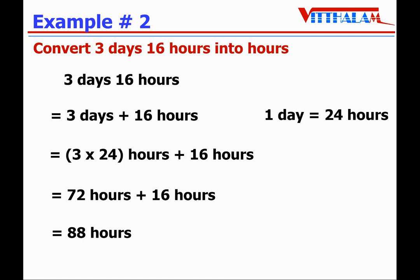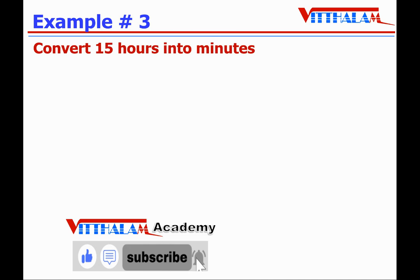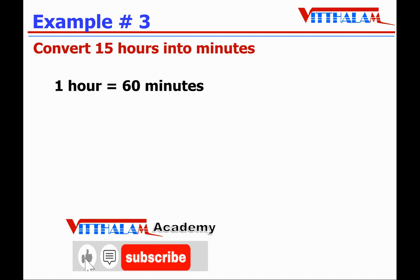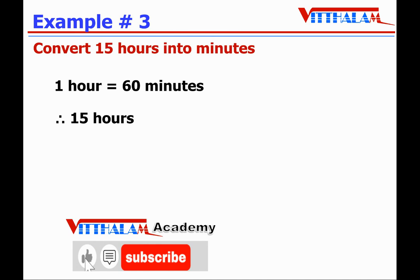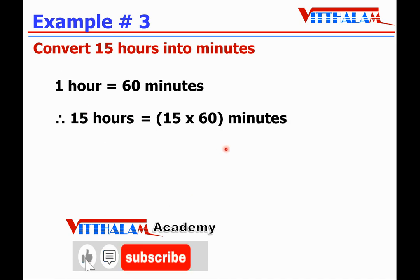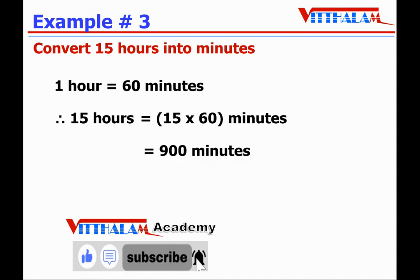Let's understand another example: convert 15 hours into minutes. We know one hour equals 60 minutes. Therefore 15 hours equals 15 multiplied by 60, and the unit hours becomes minutes. 15 times 60 is 900, so the answer is 900 minutes.